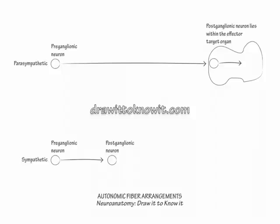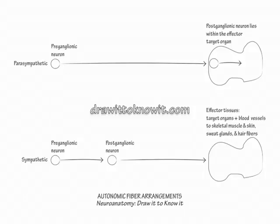Next, show a postganglionic sympathetic fiber traveling a long distance to its target organ. Its target organs include the blood vessels to skeletal muscle and skin, the sweat glands, and hair fibers.